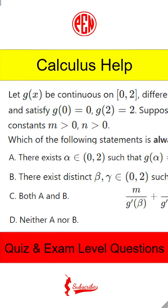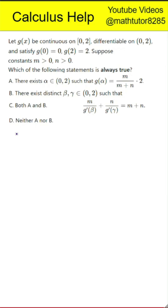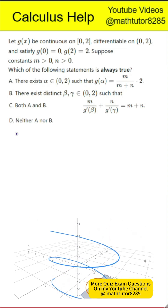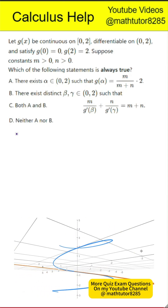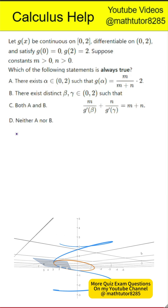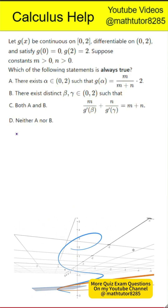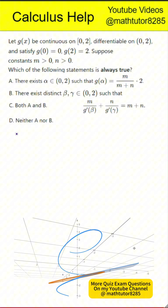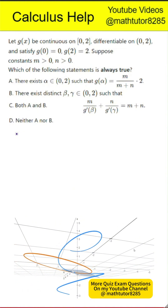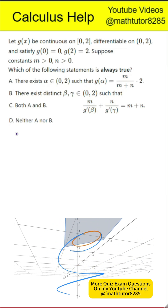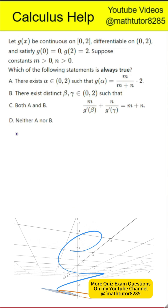This question is to analyze a continuous and differentiable function defined on a closed interval from 0 to 2 with specific values at its endpoints. Let g of x be continuous on the closed interval from 0 to 2 and differentiable on the open interval from 0 to 2, with g of 0 equal to 0 and g of 2 equal to 2. Suppose constants m and n are both greater than 0. Which of the following statements is always true?